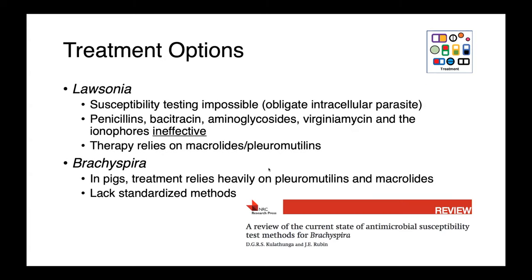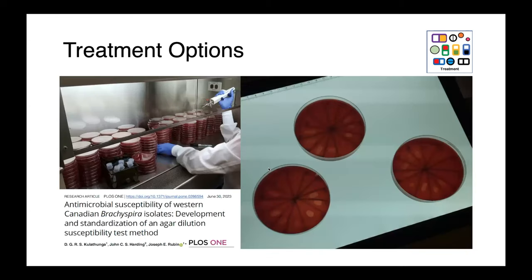As far as treatment options go: for Lawsonia, susceptibility testing is impossible — these are obligate intracellular parasites. Penicillins, aminoglycosides, virginiamycin, and the ionophores are ineffective, so therapy has historically relied on the macrolides and pleuromutilins. For Brachyspira in pigs, treatment also relies very heavily on the macrolides and pleuromutilins. Although we can grow these organisms, we lack standardized methods for conducting and interpreting antimicrobial susceptibility testing on this genus — which has been an active area of research in my lab for some years.